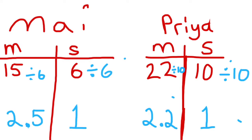To figure out how fast Mai was traveling per second, I'm going to do 15 divided by 6. And to figure out how fast Priya travels per second, I'm going to do 22 divided by 10.